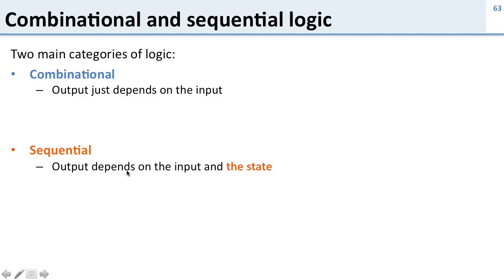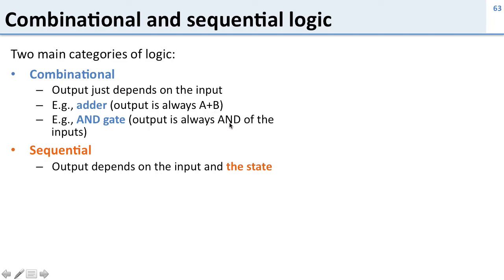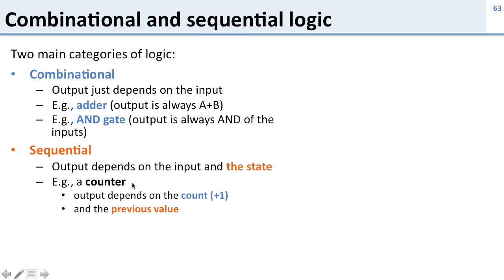Sequential logic is different — the output depends on both the input and the state. The circuit stores some values internally, and the output depends on those stored values plus the input. For example, combinational logic includes an adder (output is always A plus B) or an AND gate (output is always the AND of its inputs), regardless of what the circuit was doing before.